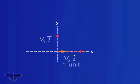A vector of length 1 is called a unit vector, i with an arrow over it representing the unit vector in the x direction, and j with an arrow over it representing the unit vector in the y direction.